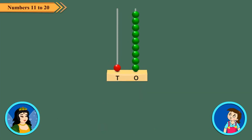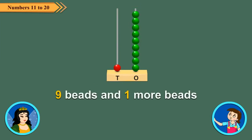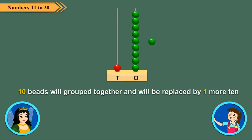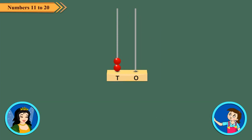How can we represent the next number? There is no space for the next bead on the rod. We will group 10 ones together and replace them by one more ten. The number shown is 2 tens or 20.